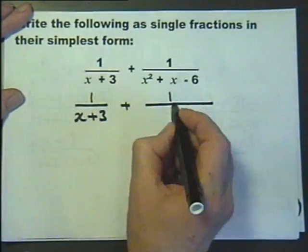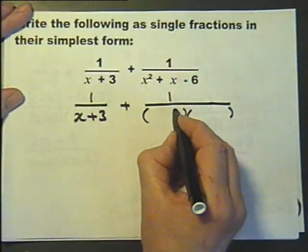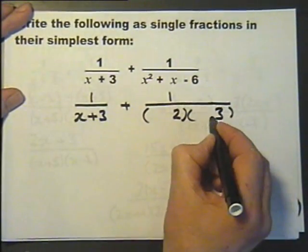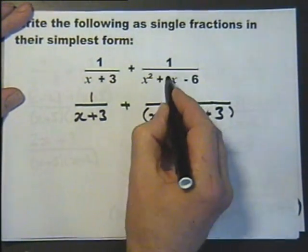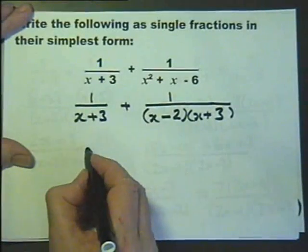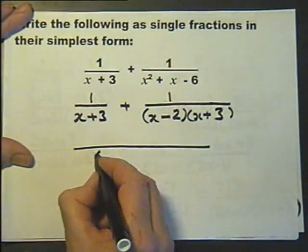Because, in fact, it will factorise. So, if I put the plus there and the minus there, that works. So, in other words, the lowest common denominator is, in fact, this.